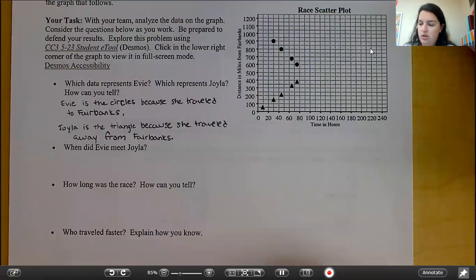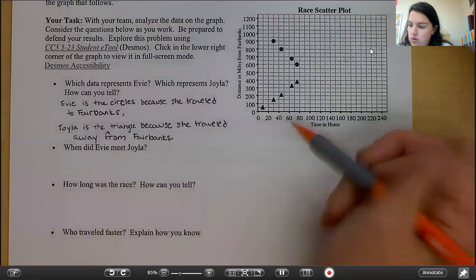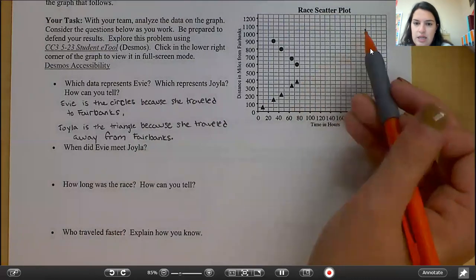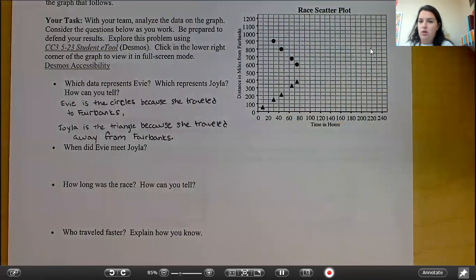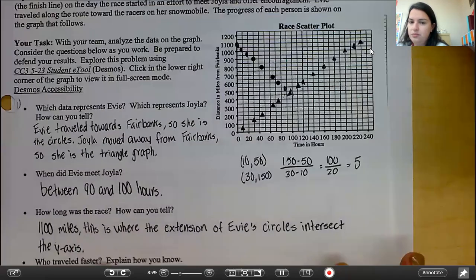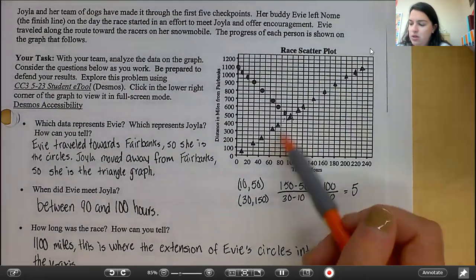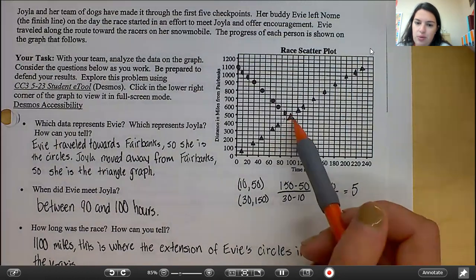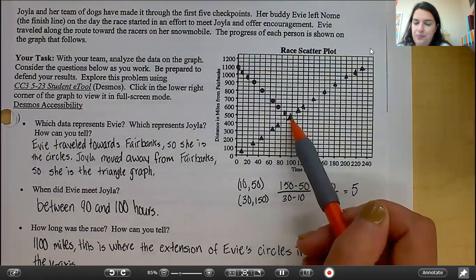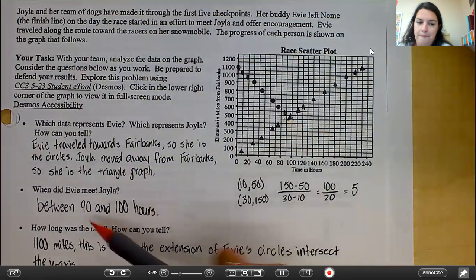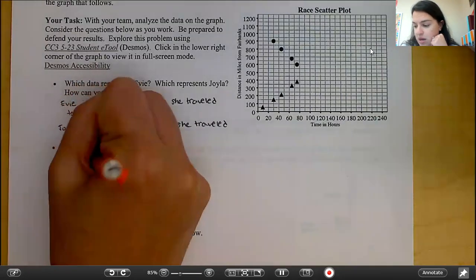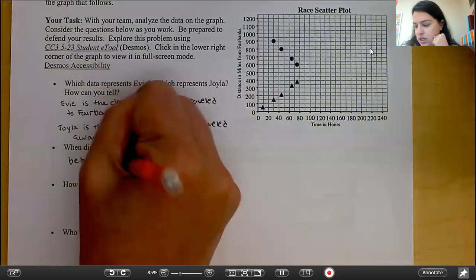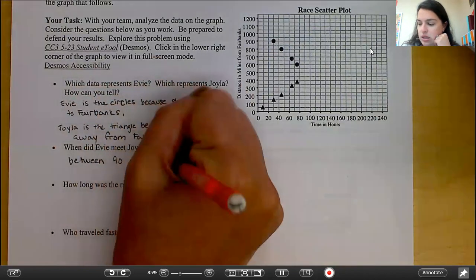If you're back with me, you've answered the next two. So Evie met Joyla. So what you should have done is you should have extended your graph. So you should have extended the circles, extended the triangles. So hopefully, when you see your graph, when you extend your graph, you see something like this. So this point right here is where they meet. There's a triangle and there's a circle. So that is between 90 and 100 hours. So it doesn't have to be exact because we're not going to be able to be exact, but we need to be close. So anywhere between 90 and 100 hours is a good answer.